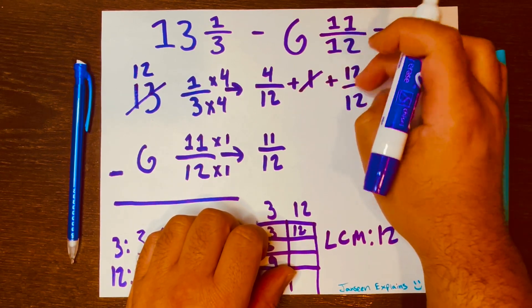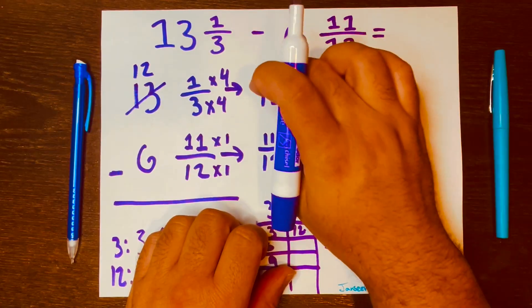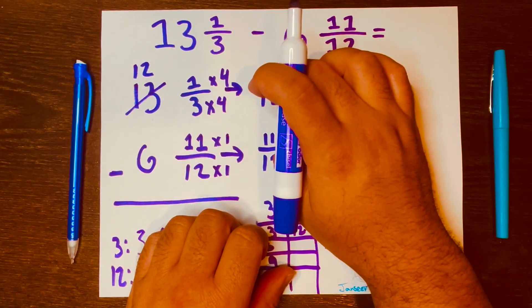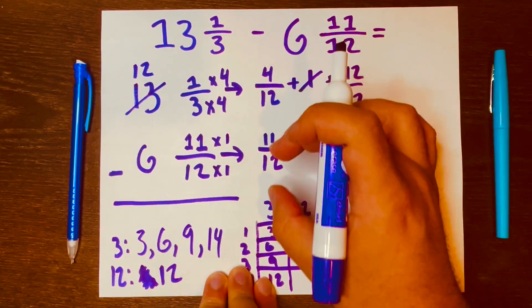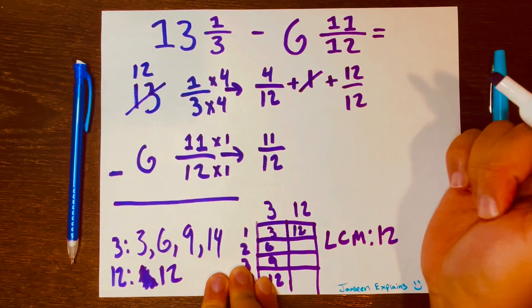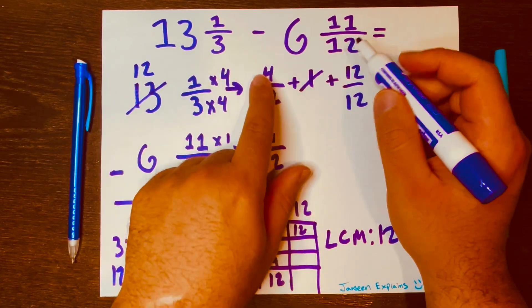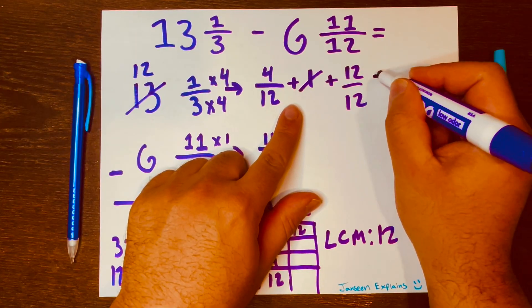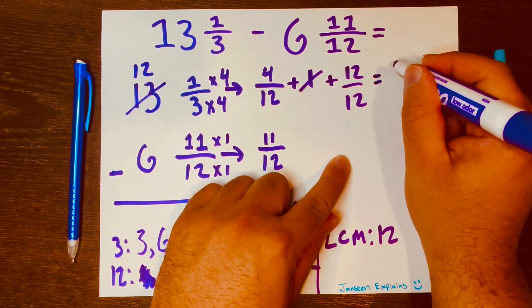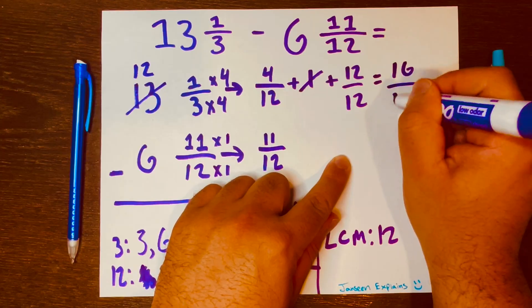So I'll just cross off that and just say plus 12/12. Remember, we're adding 12/12 or the 1 to this fraction so then it becomes larger and we can subtract 11/12. So let's go ahead and add 4 plus 12. That gives you 16/12.